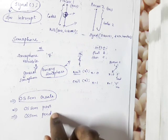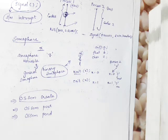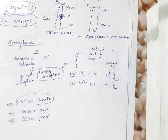These are the two functions — signal and semaphore — which are the two functions provided by the operating system for inter-process communication. The remaining functions will be discussed in the coming videos. Thank you.